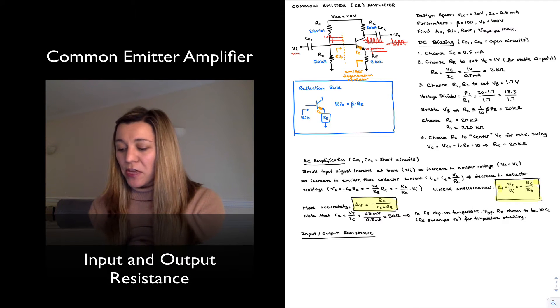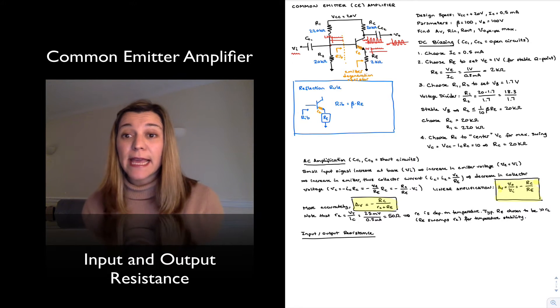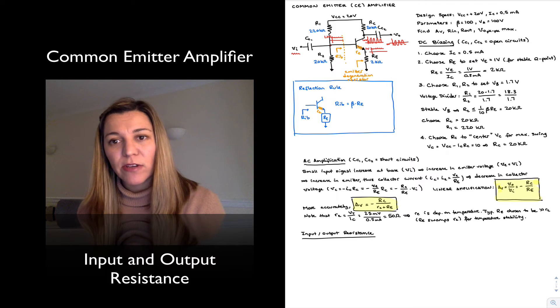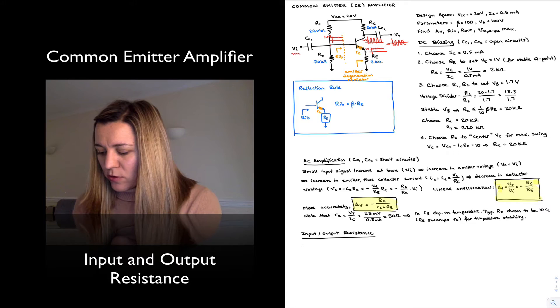The input resistance—again, we're calculating these resistances. We've just built an AC amplifier, so when we're calculating input and output resistances, we're looking at the AC equivalent circuit or gain for that matter.